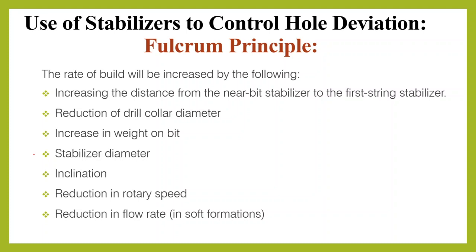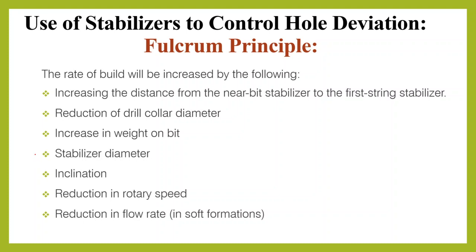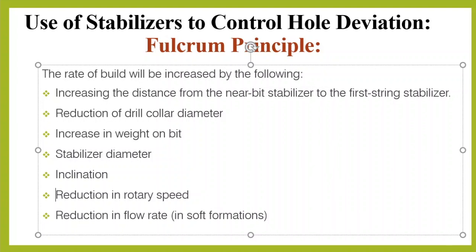Should the next stabilizer also be under-gauge, the build effect increases as the upper part of the lever moves downwards. Fifth, inclination — in order for a rotary build assembly to work, the hole needs to be somewhat inclined, over about 12 degrees, to create the sag in the first place. Greater inclination means more side force is generated due to the weight of the drill collar on the high side. Sixth, reduction in rotary speed will help to build the required angle more easily. Seventh, reduction in flow rate in soft formations, to make the angle built only by the rolling bit, not by jetting force.